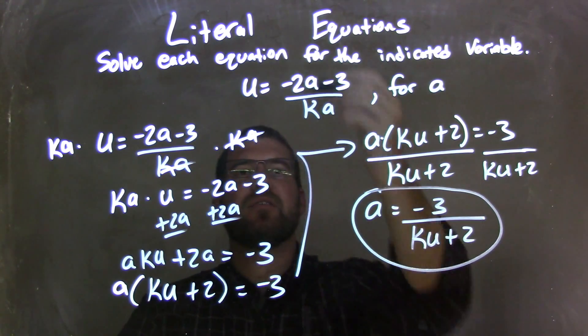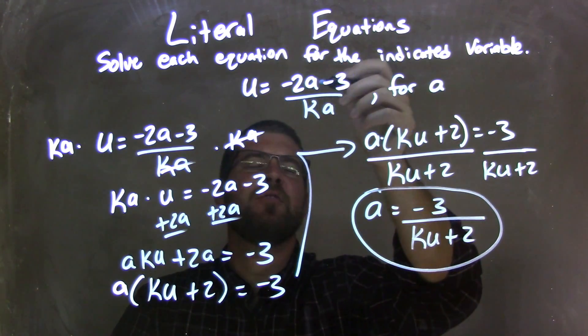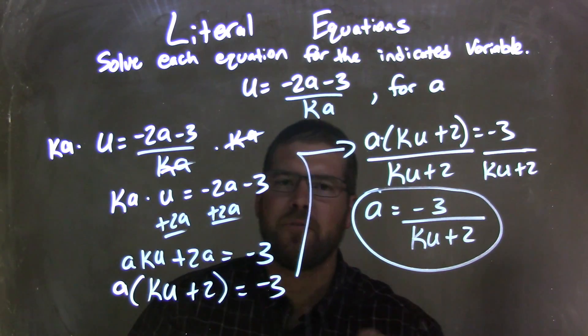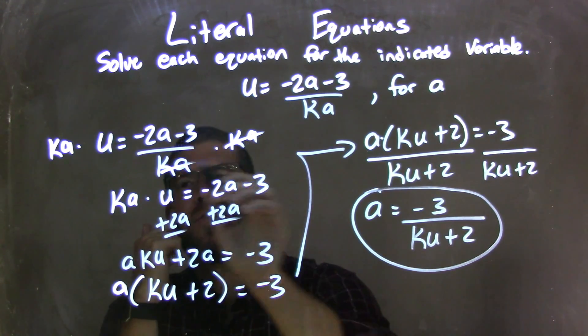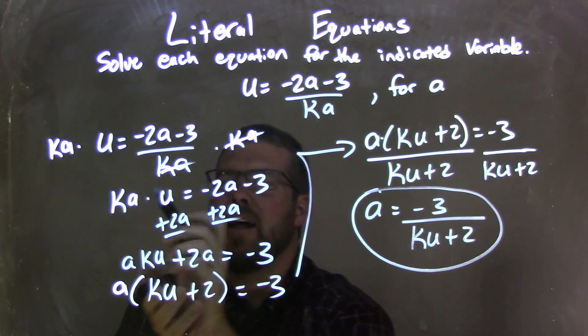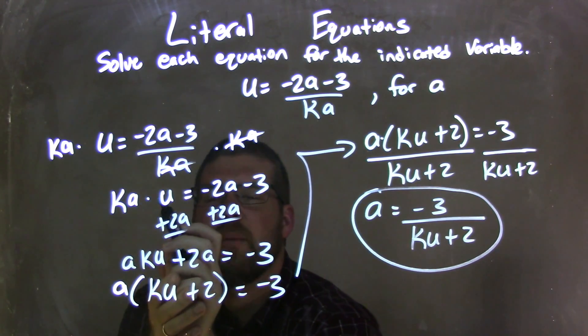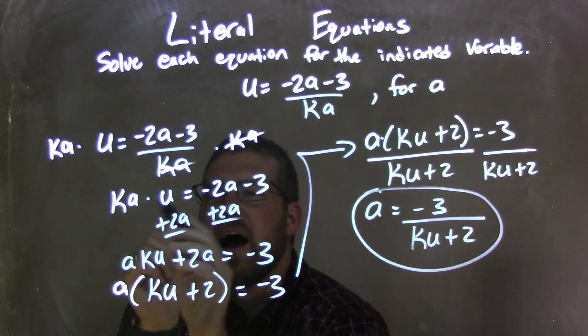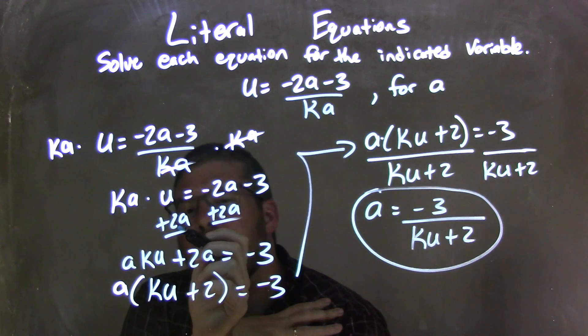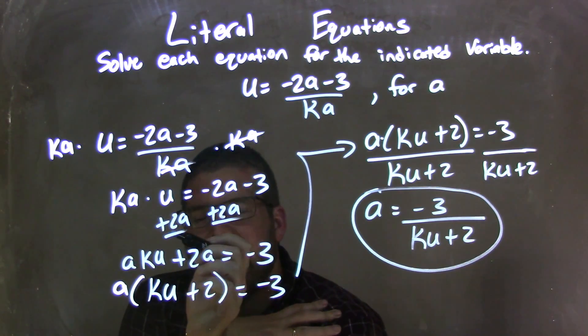So as a recap, we're given u equals negative 2a minus 3 all over ka, and we're solving that for a. I rewrite my equation over here on this side, and I multiply both sides by ka. By doing that, I was left with ka times u on the left, and on the right, it's negative 2a minus 3, and those ka's cancel.